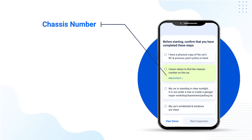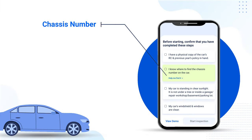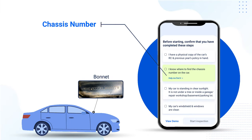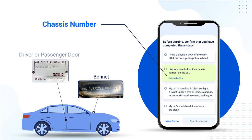Step 2: Find out where the car's chassis number is printed on the car's body. This is actually under the front bonnet of the car. In some cases, it is also found next to the driver's door or the passenger's door. Make sure the chassis number is written on the body of the car and not written on a sticker or the window of the car.